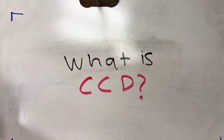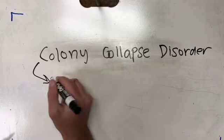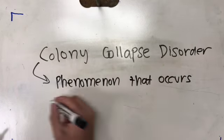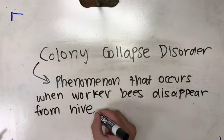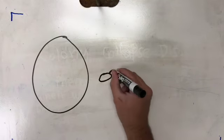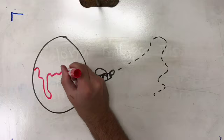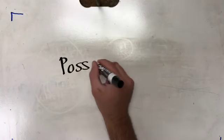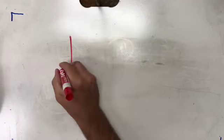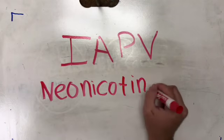When looking at CCD, different sources have different inferences on the cause of CCD. According to the article by CCD experts, 'Solving the Mystery of Vanishing Bees,' found in Scientific American, one of the attributed reasons is the IAPV virus, or the Israeli Acute Paralysis Virus, which is a widespread RNA virus of honey bees that has been linked with colony losses.